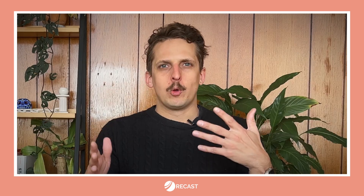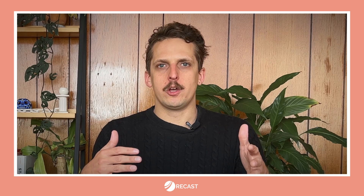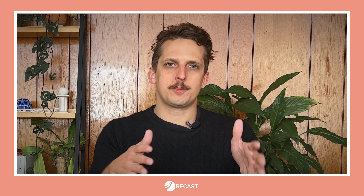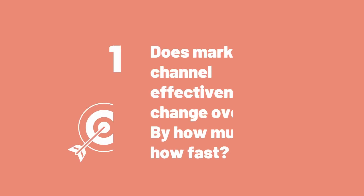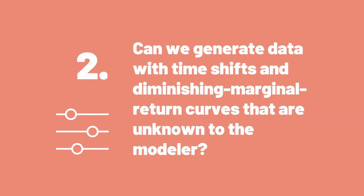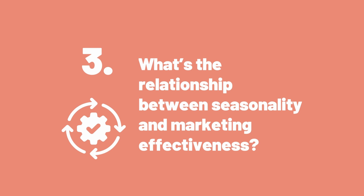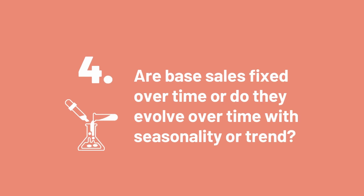But what features should you include in your data generating code for marketing mixed modeling specifically? Here's a non-exhaustive list of things you should consider. One: does marketing channel effectiveness change over time, by how much, and how fast? Two: can we generate data with time shifts and diminishing marginal returns curves that are unknown to the modeler, and how does that impact results? Three: what's the relationship between seasonality and marketing effectiveness — are they independent or do they interact? Four: are base sales fixed over time, or do they evolve over time with seasonality or trend?